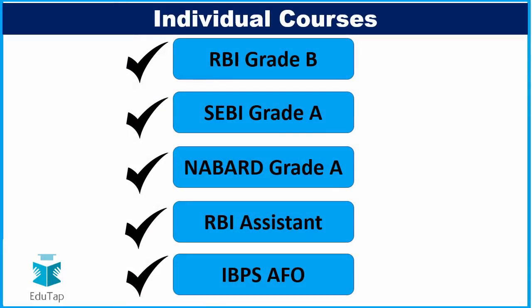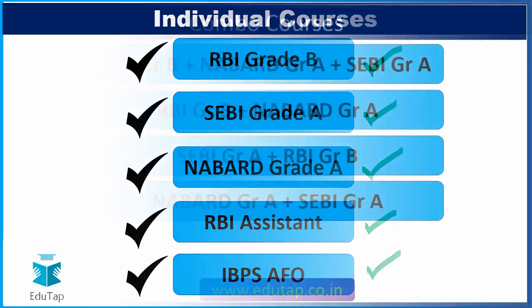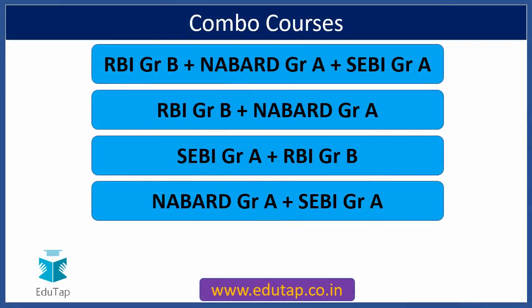If you want to know more about the courses being offered by Edutap, you can take a quick snapshot of this slide. We offer individual courses including RBI Grade B, SEBI Grade A, NABARD Grade A, RBI Assistant, and IBPS Agriculture Field Officer. We also offer combo courses — RBI NABARD SEBI, and RBI NABARD SEBI combinations — so you can opt for any combo based on your own exam preferences.